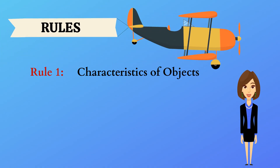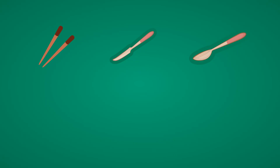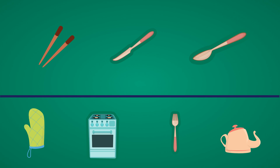Rule two: object and its usage. In the top row we have a chopstick, a knife, and a spoon. What is common between them? These are all used for eating food. In the answer choices, we need to find an item that is also used for eating food — and the answer is fork.